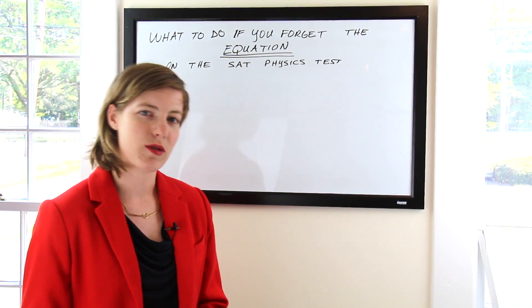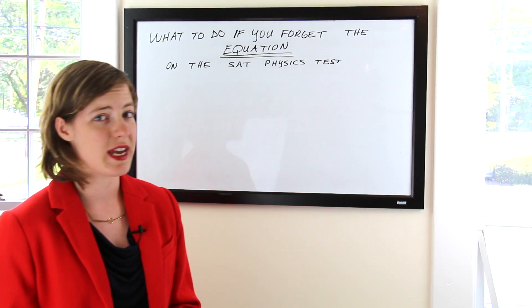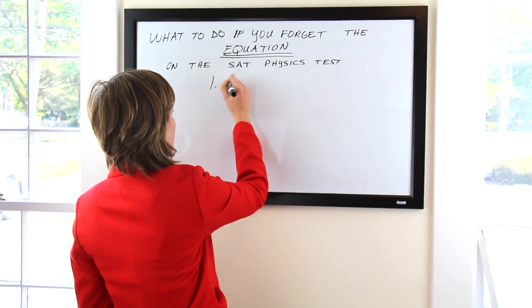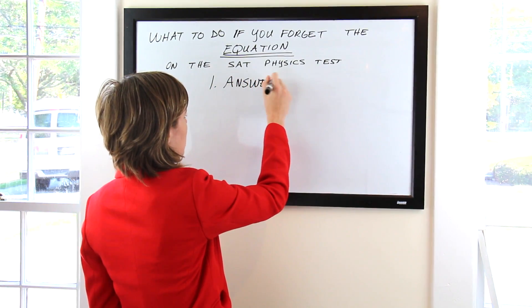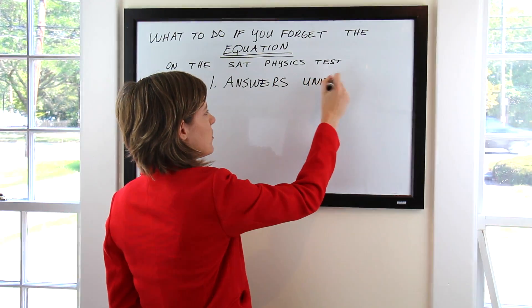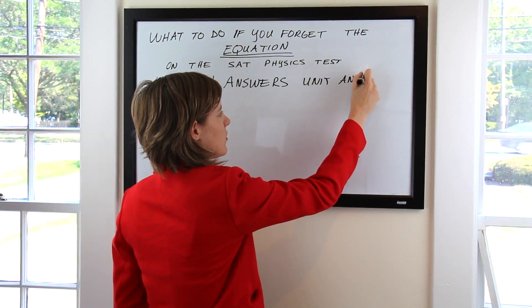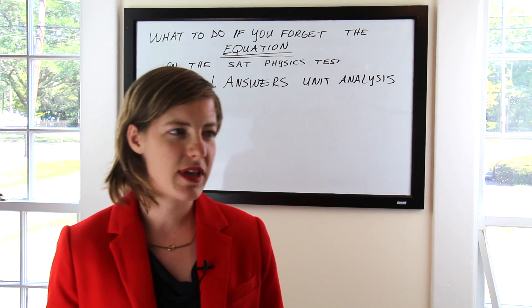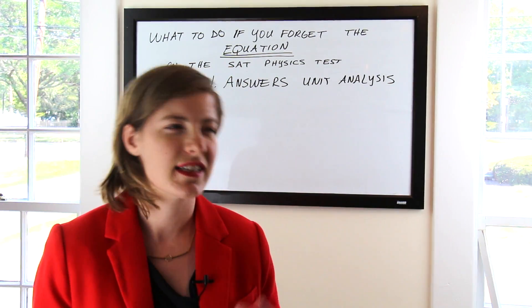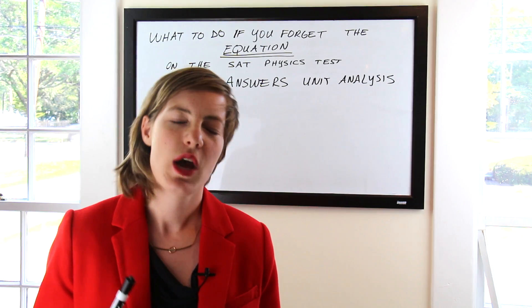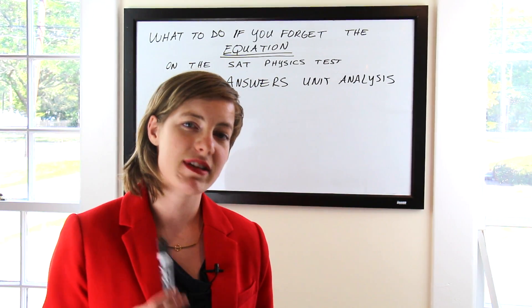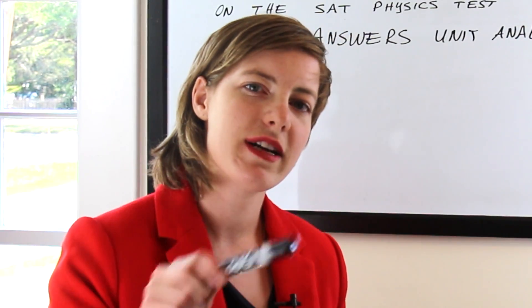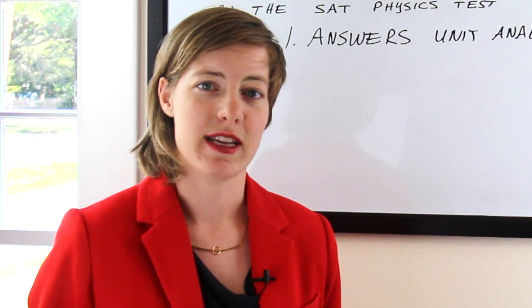Our first strategy for remembering the equation that you can't remember off the top of your head is unit analysis based on answer choices. You remember that equation for specific heat, it had something with degrees Celsius and kilograms in it, but then you look at the answer choices and you realize that every single answer choice has units on it. And then you can figure out which variable goes where in order to get the answer.